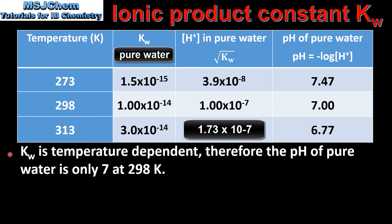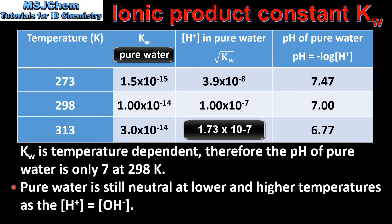So Kw is temperature dependent, therefore the pH of pure water is only 7 at 298 Kelvin. However, pure water is still neutral at lower and higher temperatures, as the concentration of the hydronium ions is equal to the concentration of the hydroxide ions.